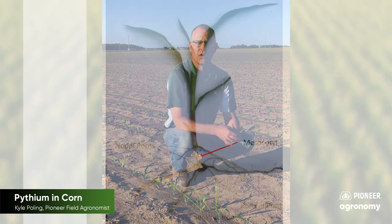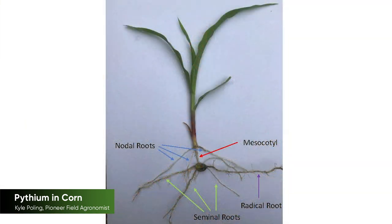This is a critical time in a corn plant's life as it's transitioning from the primary root system — comprised of the radicle root and seminal roots — over to the nodal roots, or the permanent root system, which will provide the bulk of the water and nutrients throughout a plant's life.